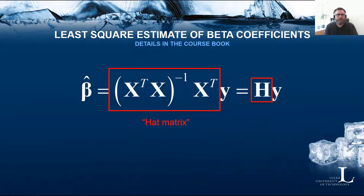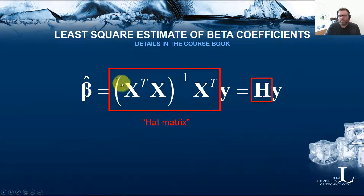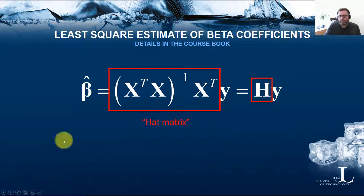Remember that the least squares estimate of the beta coefficients is given by this formula. We need X and X transpose, and we want to take the inverse of X transpose X, multiply it with X transpose, and also multiply by the Y response column vector — that gives us our estimated beta values.